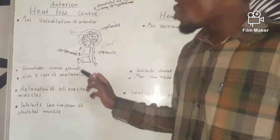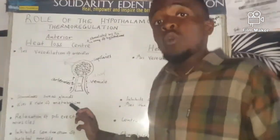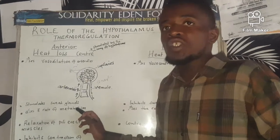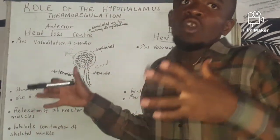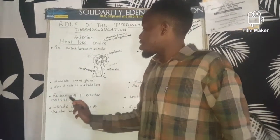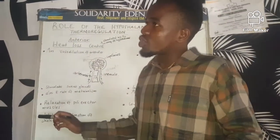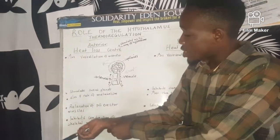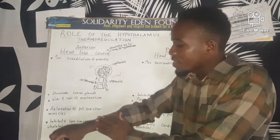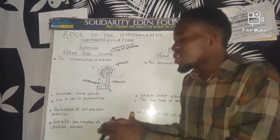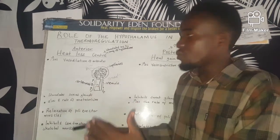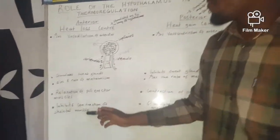Another response is a decrease in the rate of metabolism. During metabolic reactions, heat energy is liberated, which raises the body temperature. Decreasing the rate of metabolism reduces the amount of heat produced internally. Additionally, there is relaxation of the pili erector muscles in the skin. When they relax, the hairs lie flat, which increases the chances of heat loss by convection, radiation, conduction, and evaporation.